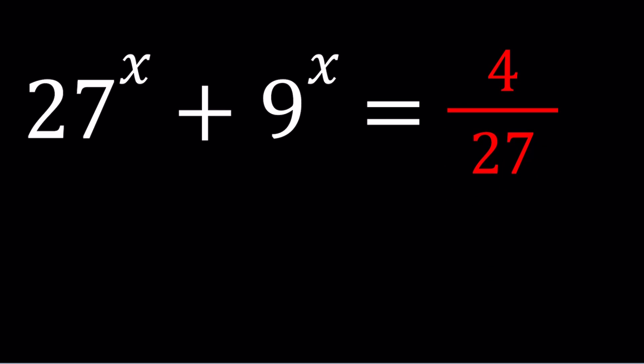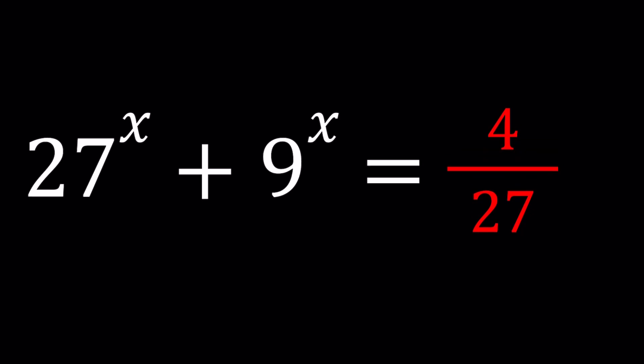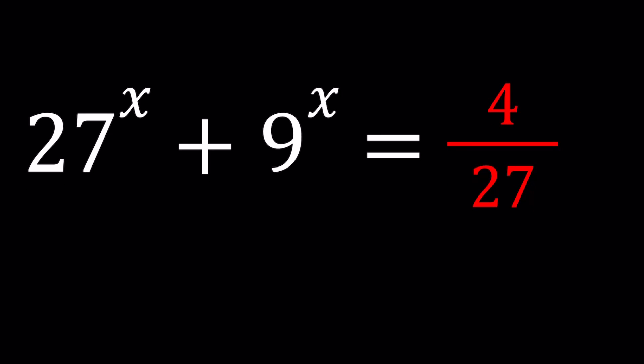So in this equation, something is definitely calling, right? And that is substitution. And you know that I like substitution, hopefully. It's just amazing. We're going to go ahead and take a look at the bases first. We have a 27 and a 9, which means that they have a common base of 3 because they're both powers of 3, right?